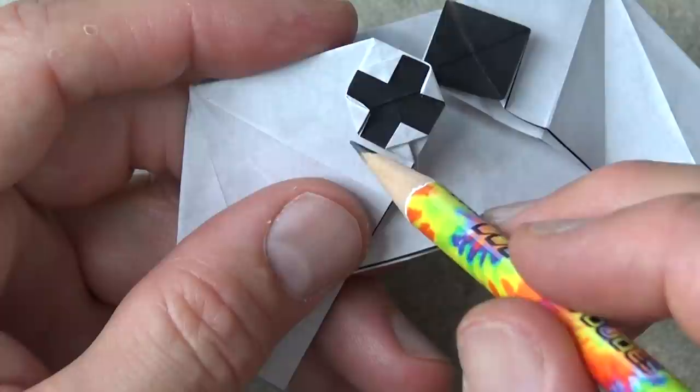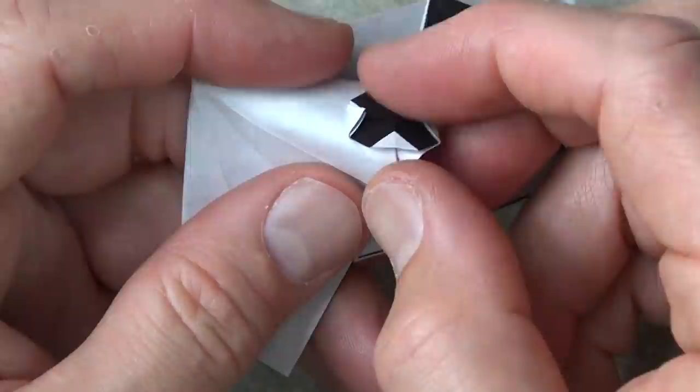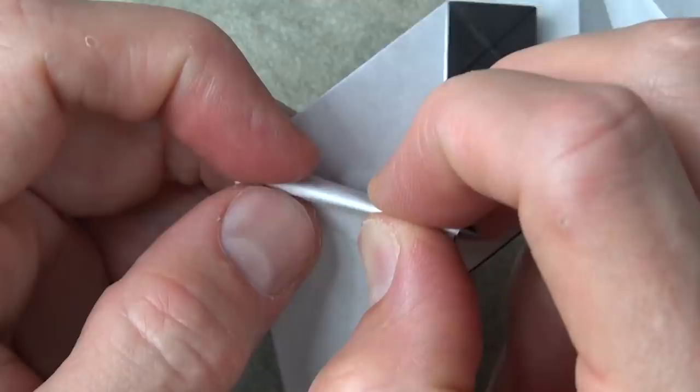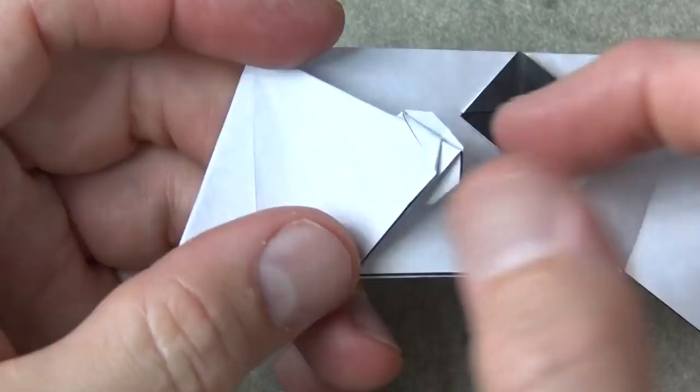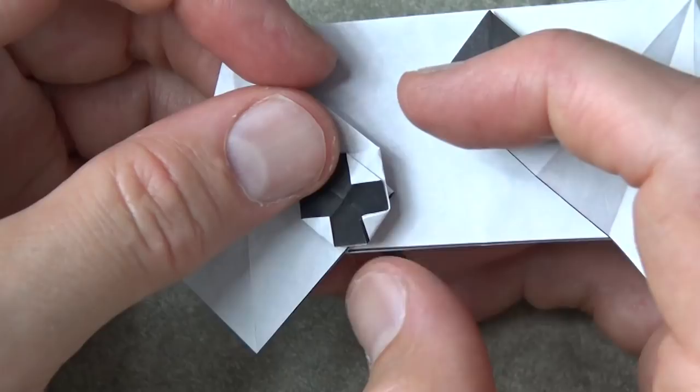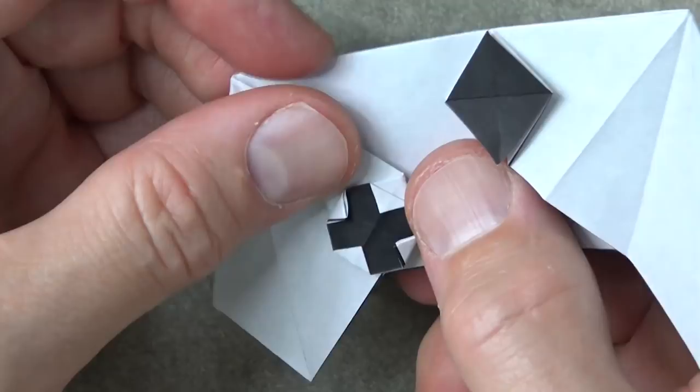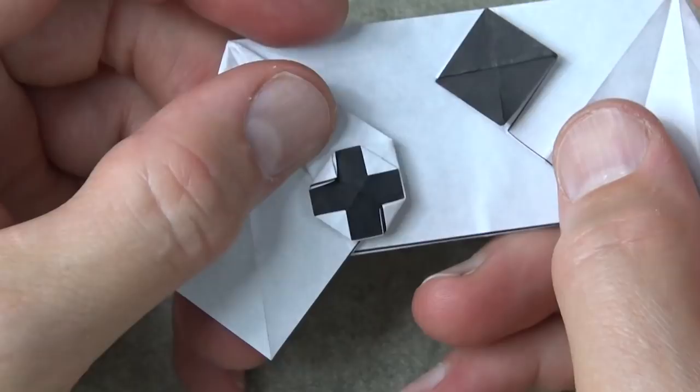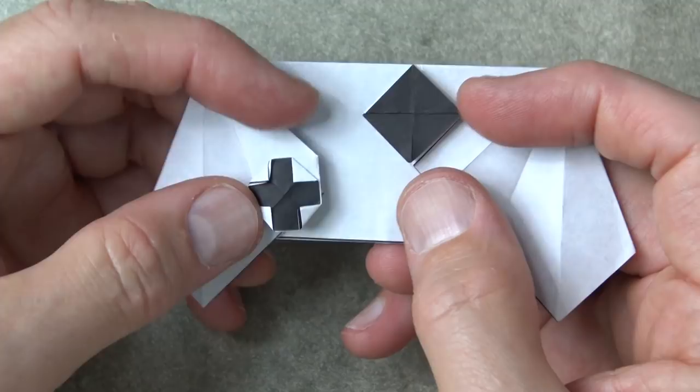So fold the flap behind like this. And now make another fold on this point so that the cross rocker is straight. So it comes down to this edge. About like that. Okay, and the cross rocker is done.